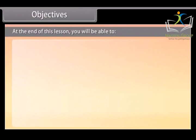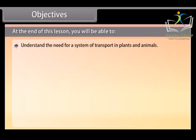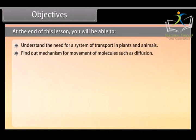Objectives: At the end of this lesson you will be able to understand the need for a system of transport in plants and animals, find out mechanism for movement of molecules such as diffusion, understand osmosis and active transport.